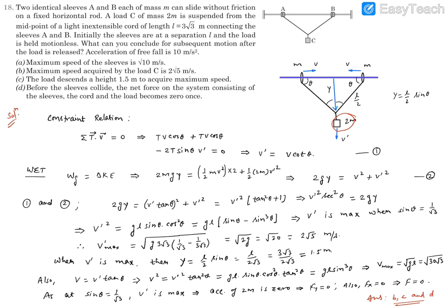Consider the load of mass 2M moving downward with velocity v'. Since the total chord length is L, each half is L/2. Let the load have descended a distance y downward. In this general situation, we relate velocities using the constraint relation: the sum of T dot v must equal 0. The tension T and velocity v of each sleeve make an angle theta, giving a dot product of T·v·cos θ for each sleeve, so summing gives 2Tv·cos θ.